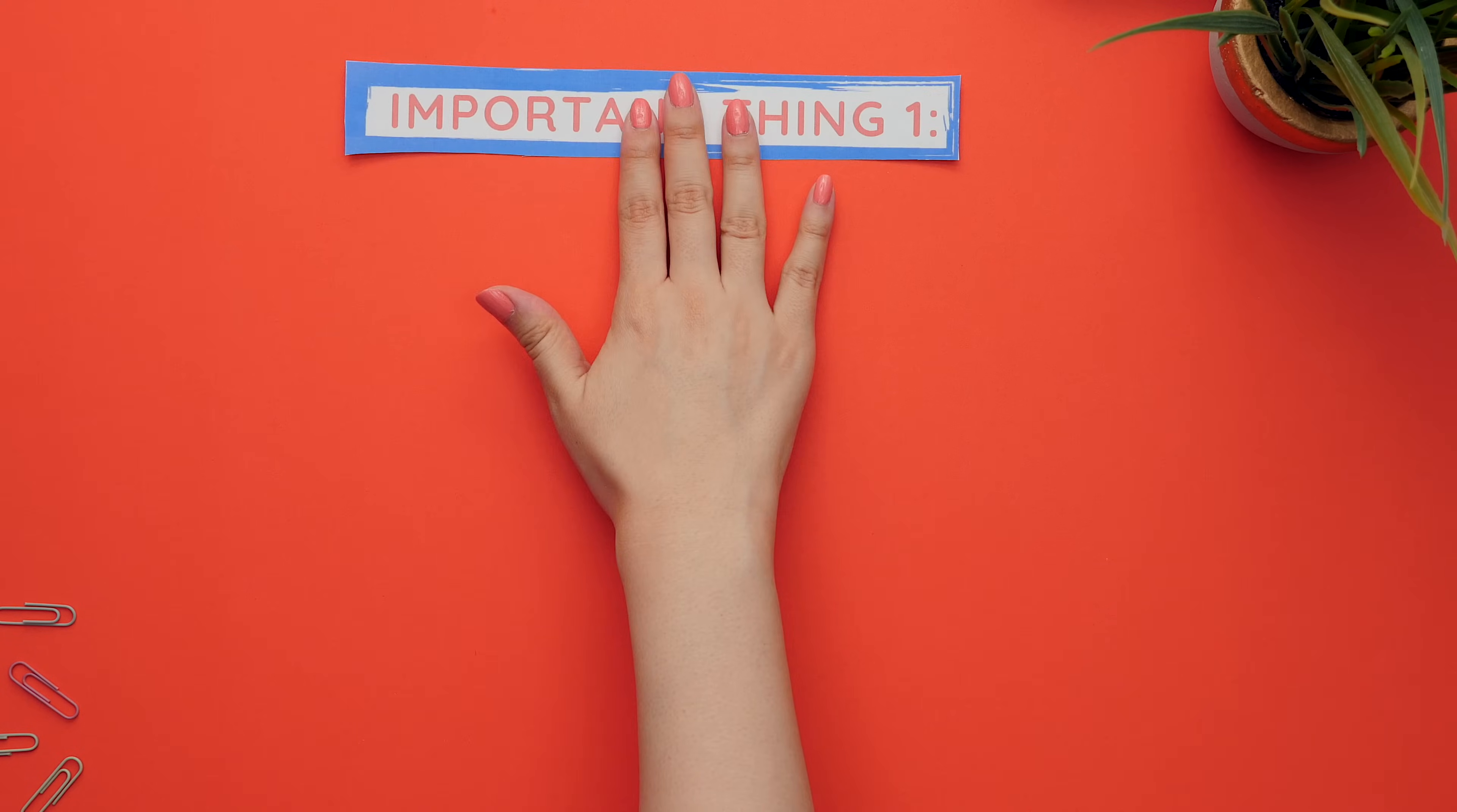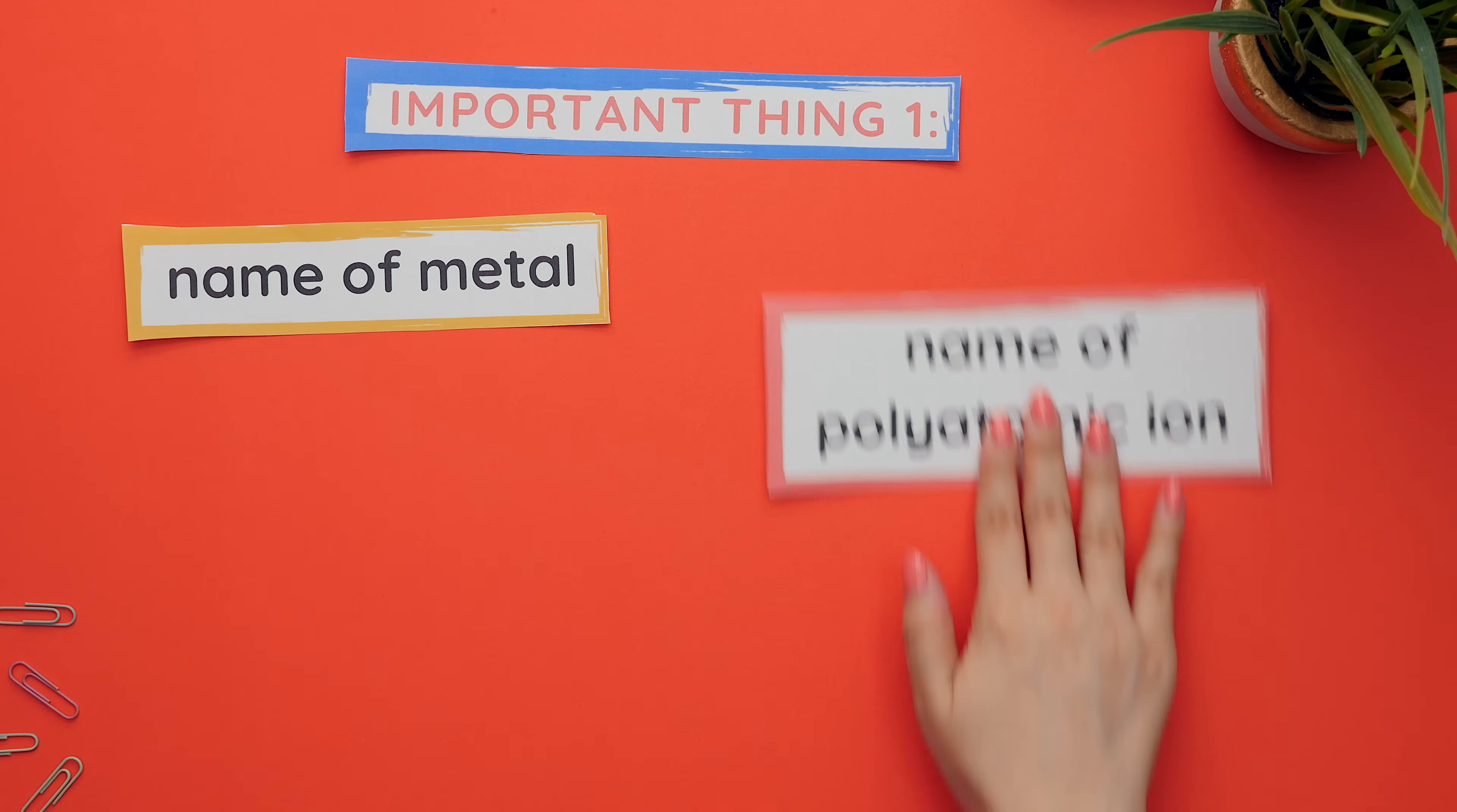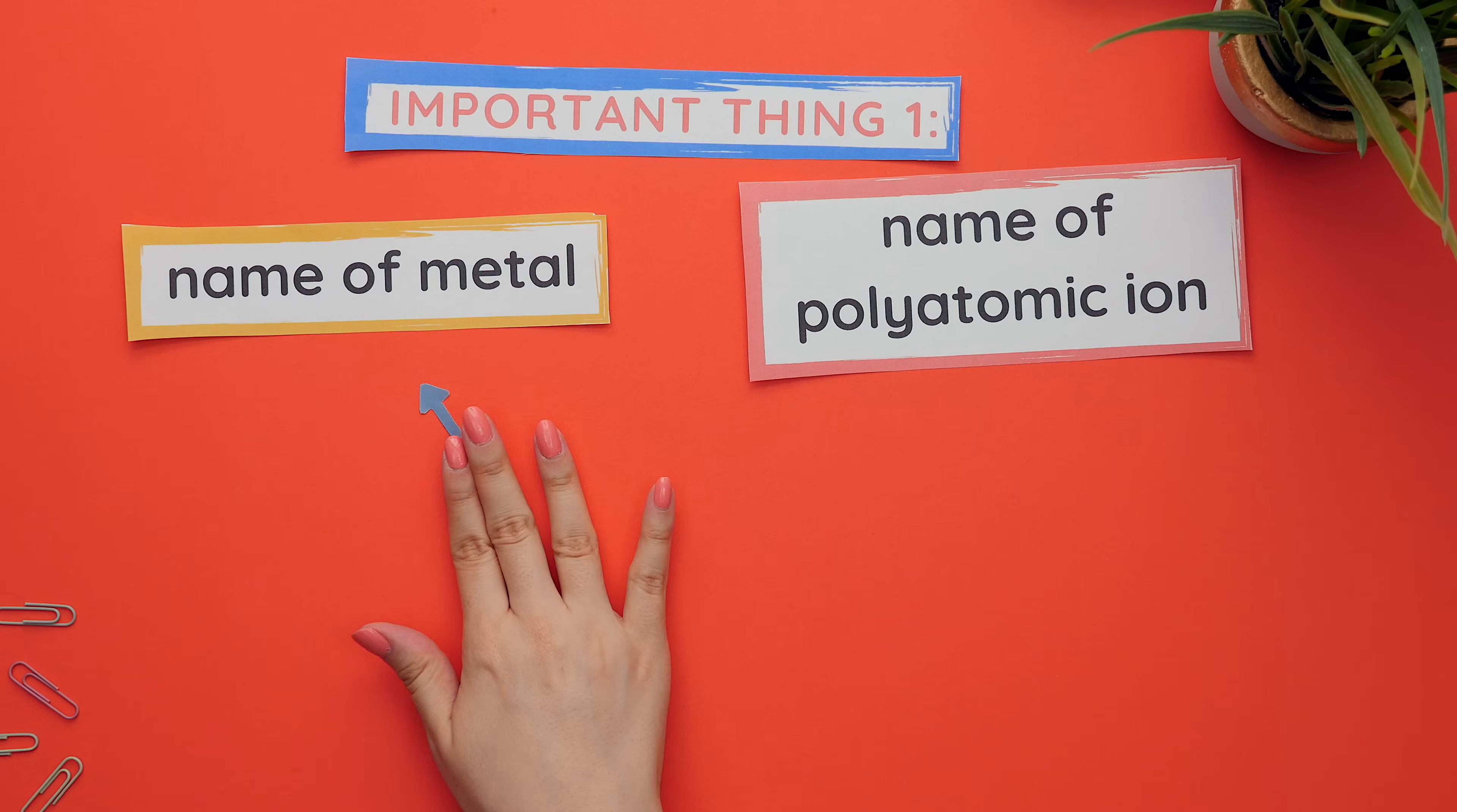Important thing one: to name an ionic compound with a polyatomic ion, the name will consist of the name of the metal followed by the name of the polyatomic ion, and everything is in lowercase.